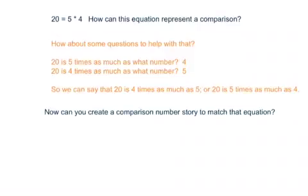Hmm. So have some fun now and create a comparison number story to match that equation. You can just make up a story. Like the last one was about CDs and two people who had CDs. What could you say for this 20 = 5 × 4? Put a story in place. Jot that down. We'll be looking at those when we go over the lesson.